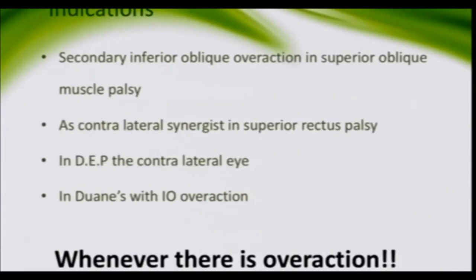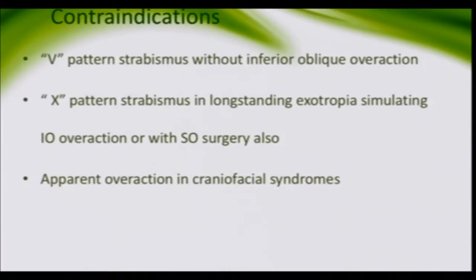Secondary inferior oblique overactions include superior oblique muscle palsy, contralateral synergistic superior rectus palsy — in these patients this would not be the primary surgery of choice, but may be done when all other options are exhausted. DEP with the contralateral eye also won't be the primary surgery of choice. In Duane's syndrome, if we are sure the upshoot or downshoot is due to inferior oblique overaction only then should we touch the inferior oblique; otherwise, upshoots and downshoots in DRS are due to tight lateral rectors, not inferior oblique overaction.